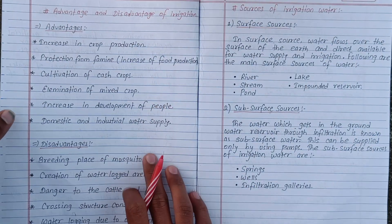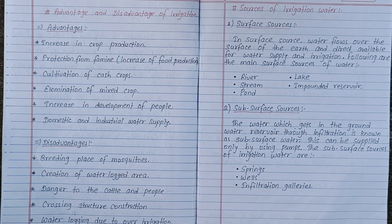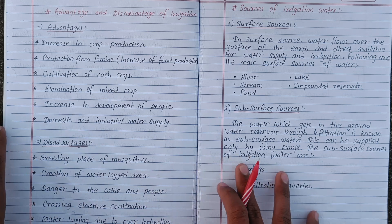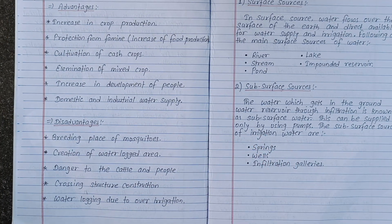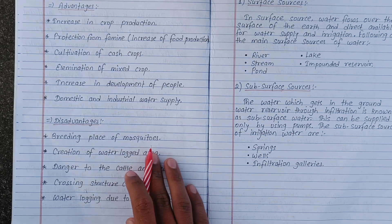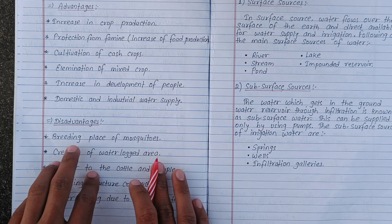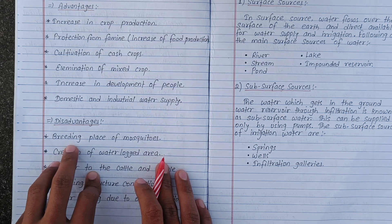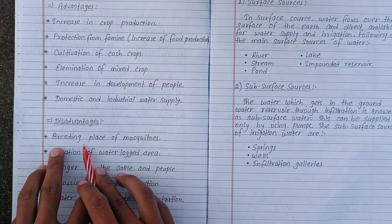The advantages and disadvantages include sources of water. A significant disadvantage involves waterlogging of soil — it creates a long-term problem in the soil if irrigation is not managed properly, leading to soil degradation.